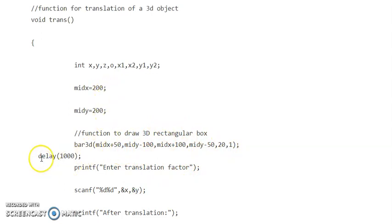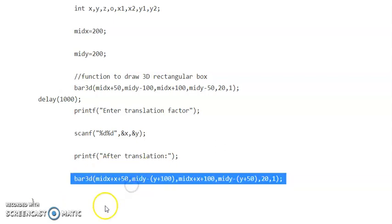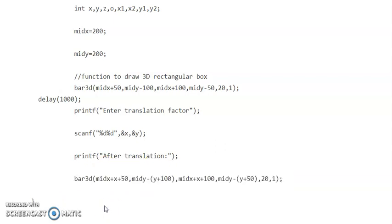Then to see your particular output you are using a delay function. Then next you are taking the translation factor from the user, by which amount you have to translate that particular 3D rectangular box. Then after translation, again you are declaring the bar 3D function. This bar 3D function is used to show your output after translation. This is your void trans function.